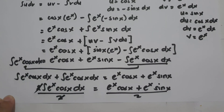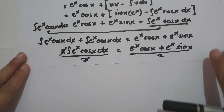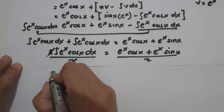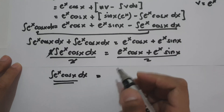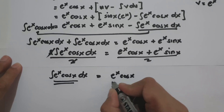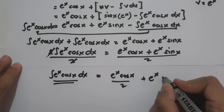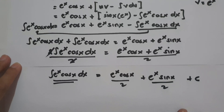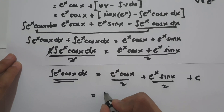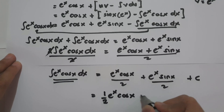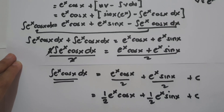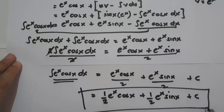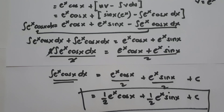The final answer is: the antiderivative of eˣ·cos(x) dx = eˣ·cos(x)/2 plus eˣ·sin(x)/2 plus C. This can also be written as (1/2)eˣ·cos(x) plus (1/2)eˣ·sin(x) plus C. I hope you've learned from this video. Thank you so much for watching and God bless us all.